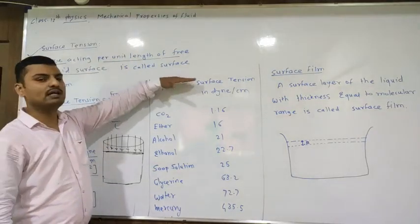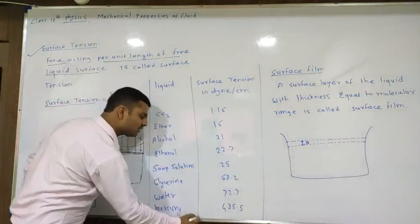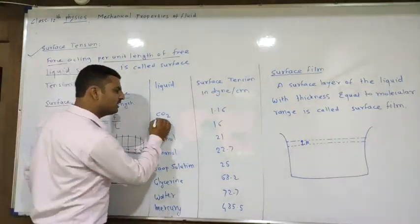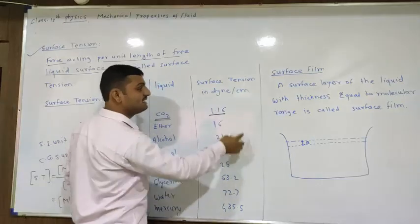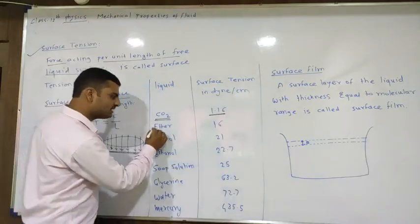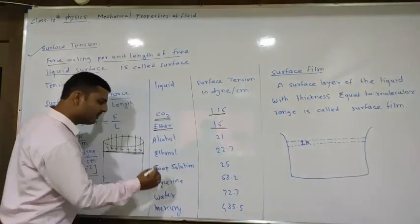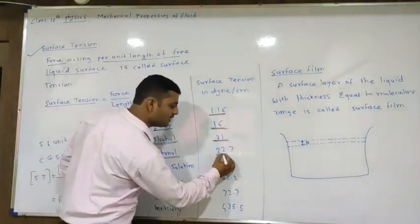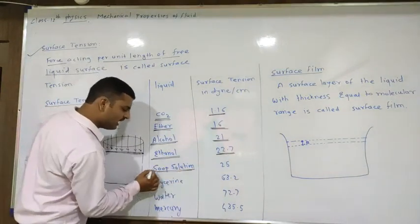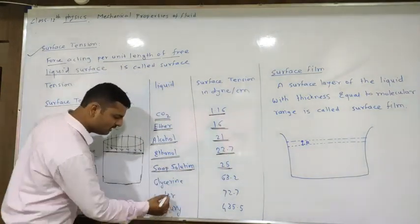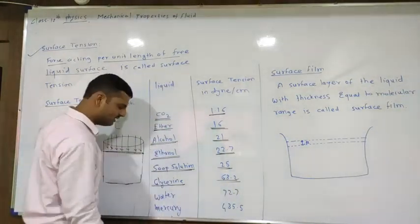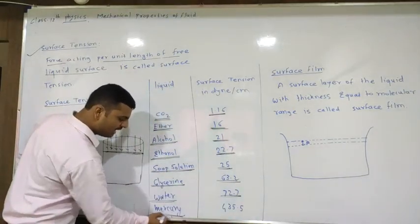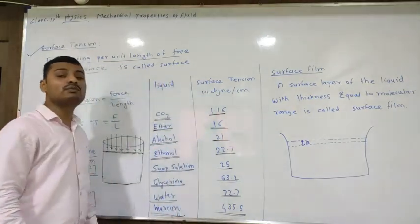Here are surface tension values for some liquids. Liquid CO2: 1.16 dyne/cm; Ether: 16 dyne/cm; Alcohol: 21 dyne/cm; Ethanol: 22.7 dyne/cm; Soap solution: 25 dyne/cm; Glycerine: 63.2 dyne/cm; Water: 72.7 dyne/cm; Mercury: 435.5 dyne/cm.